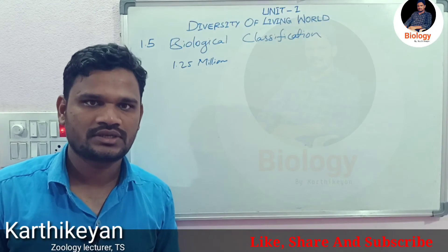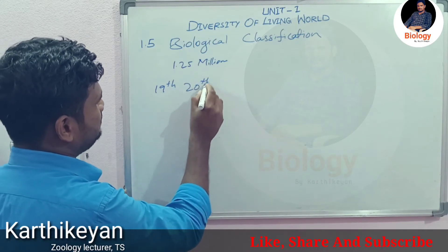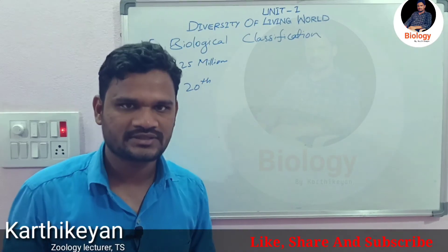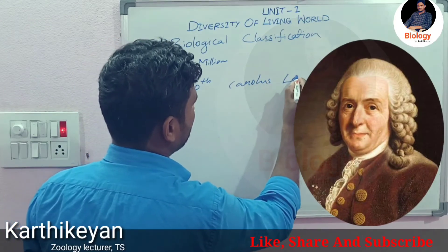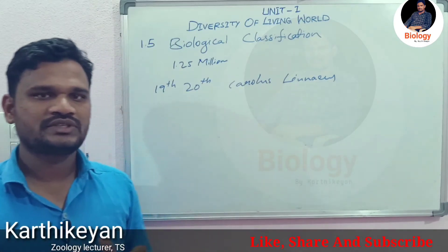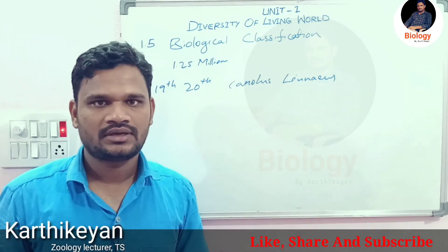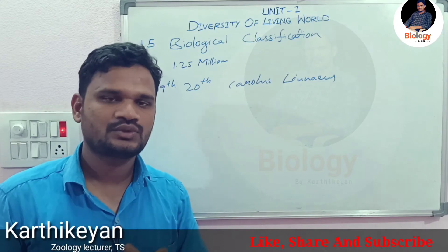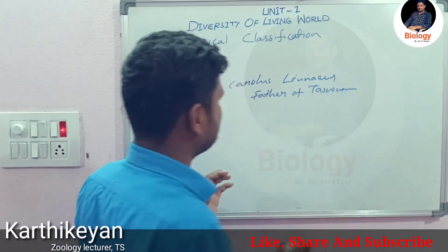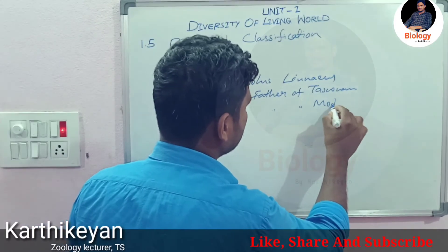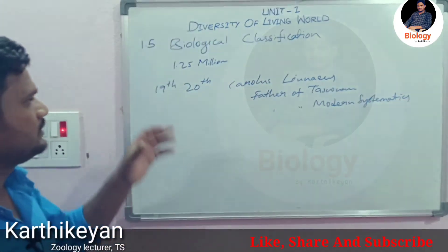In the 19th and 20th centuries, the basic classification system came into existence. That classification was introduced by Carolus Linnaeus, who introduced two forms: numerical classification and phylogenetic classification. Carolus Linnaeus was also known as the father of taxonomy and the father of modern systematics.